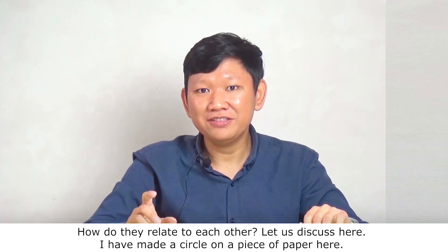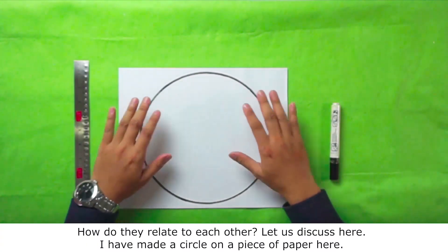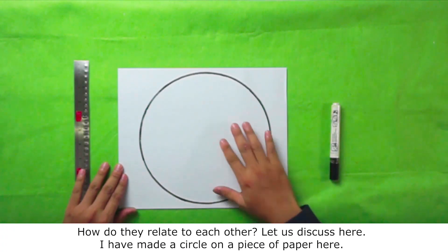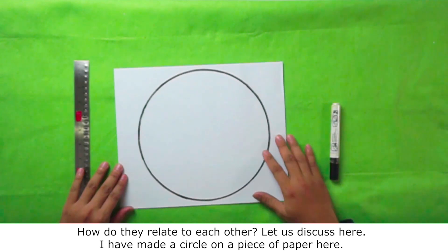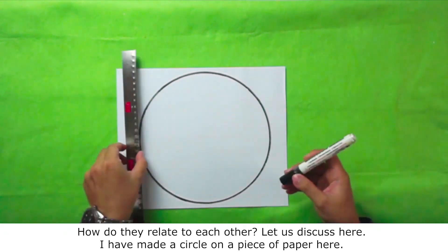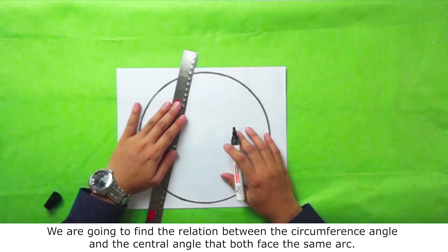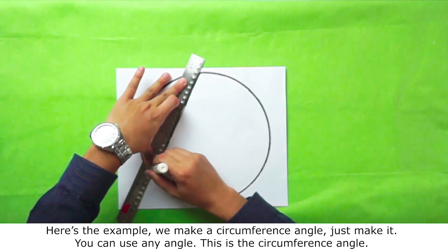I have made a circle on a piece of paper here. We are going to find the relation between the circumference angle and the central angle that both face the same arc. Here's the example.